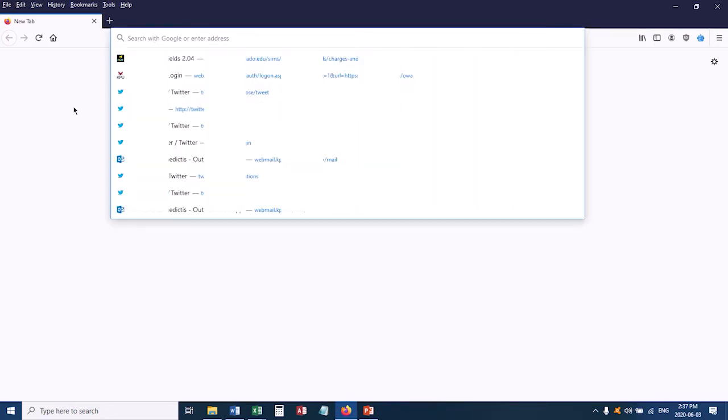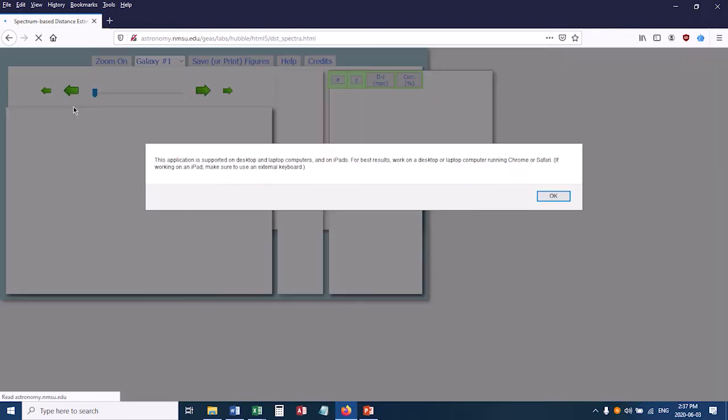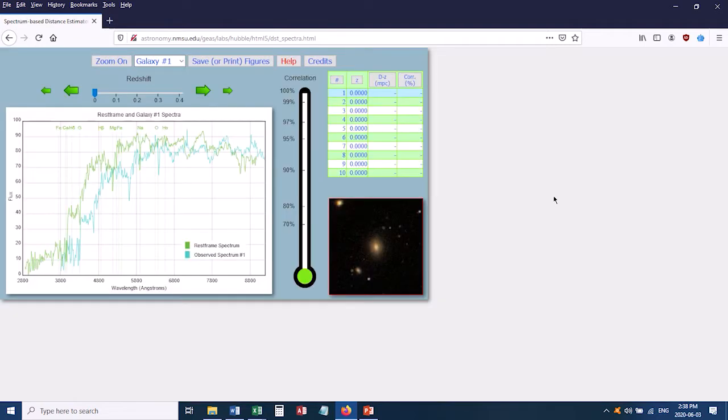So the first thing you do is go to the web address given in your lab manual, and when you first log on it's going to give you this pop-up window that just says that in their opinion you should be using this simulation on a computer or an iPad, but not on a phone. So just click OK, and this is your simulation.